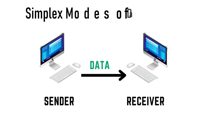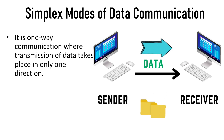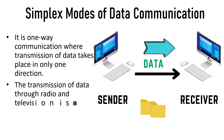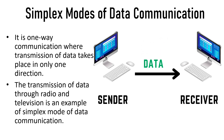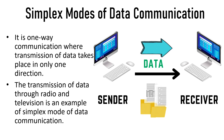In simplex mode, it is one-way communication where transmission of data takes place in only one direction. The sender sends the data and the receiver receives it, but the receiver cannot retransmit the data. The transmission of data through radio and television is an example of simplex mode, where the sender broadcasts signals and the receiver receives them with no two-way communication.